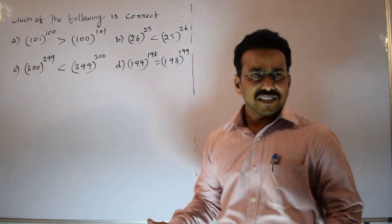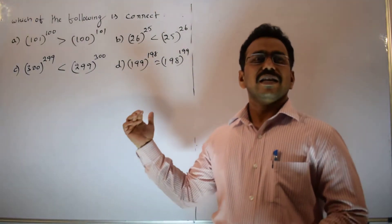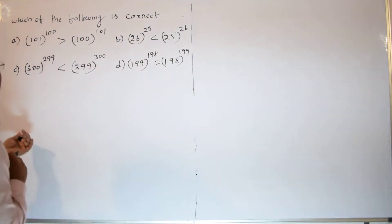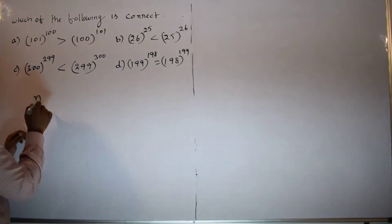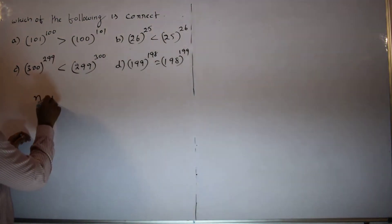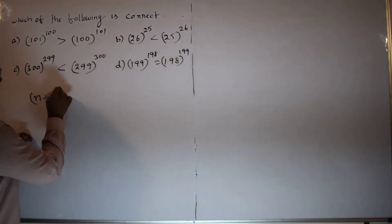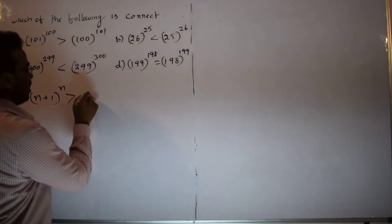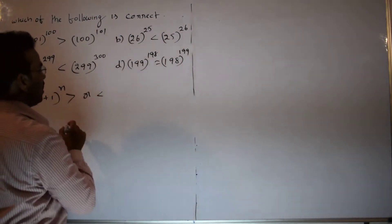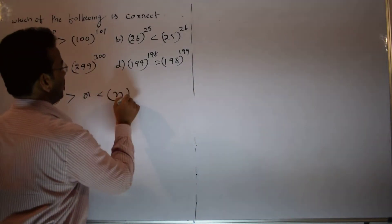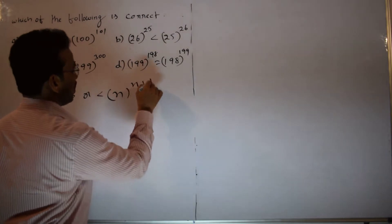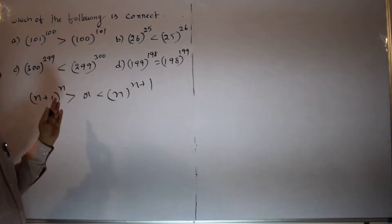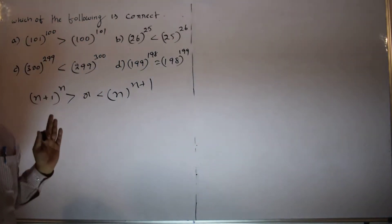Let me write the generalized idea of the above options. All of the options are of the form: (N+1)^N compared to N^(N+1). That is, which is greater or less?